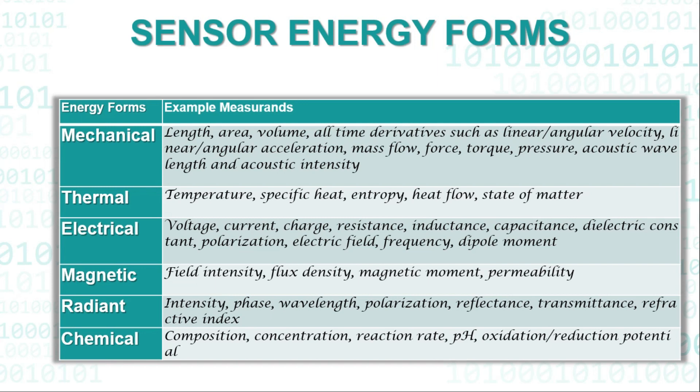The electrical, of course, as we always educate ourselves about electromechanical technology, this involves the voltage, the current, the charge, the resistance, inductance, capacitance, dielectric constant, polarization, electric field, frequency, dipole moment. The magnetic ones focus on the measurements of field intensity, the flux density, magnetic moment, or permeability. The radiant involves intensity, the phase, the wavelength, the polarization, the reflectance, transmittance, the refractive index. And of course, the chemical: composition, concentration, reaction rate, or the pH, oxidation, the reduction potential.